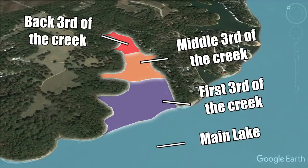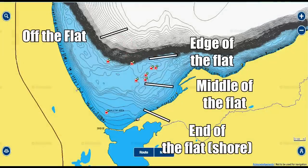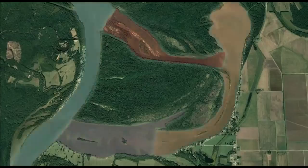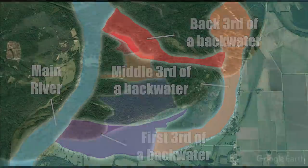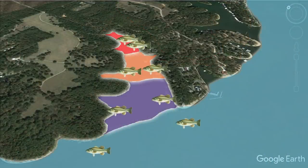This four-area breakdown is exactly what Rick Klun was talking about. You can apply it not only to lakes with creeks, but also to big natural lakes — breaking it into deep water, the edge of a flat, the middle of a flat, and the bank. On a river system, you have the main river, the first third of a backwater, the middle, and the back. The key is breaking each section of a lake into four distinct areas where fish are likely to be.